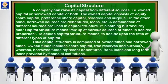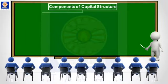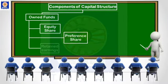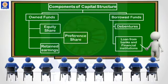A capital structure is composed of owned funds and borrowed funds. Owned funds include equity shares, preference shares, and reserves and surplus. Borrowed funds include debentures, loans from banks, loans from financial institutions, and public deposits.